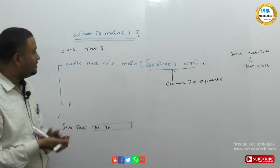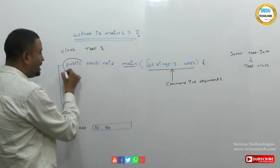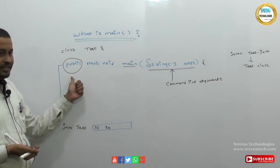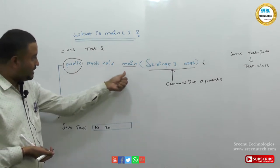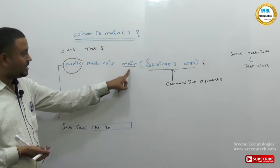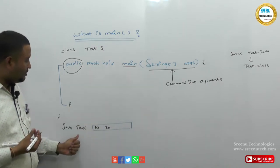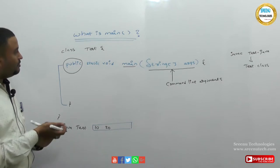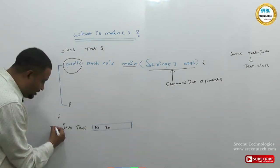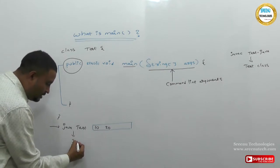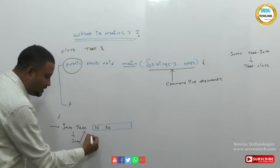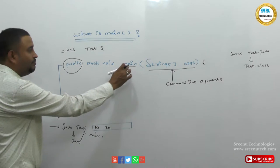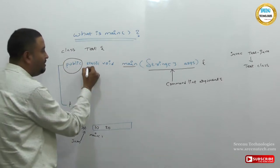Why is the main method public? Can we take the main method as private? No, we cannot. If the main method is private, it is available only within the class. We cannot access it from outside the class. When we run the program, JVM calls the main method. If main is private, JVM cannot call it directly. That's why the main method should be public.